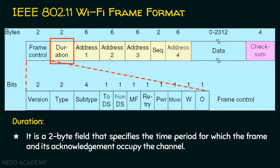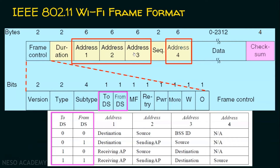Next, we have address 1, address 2, address 3, and address 4. Since Wi-Fi is a data link layer protocol, these carry MAC addresses, and their meaning depends on the To DS and From DS fields. When both are set to 00, address 1 is the destination address, address 2 is the source address, address 3 is the BSS ID, and address 4 is not applicable.